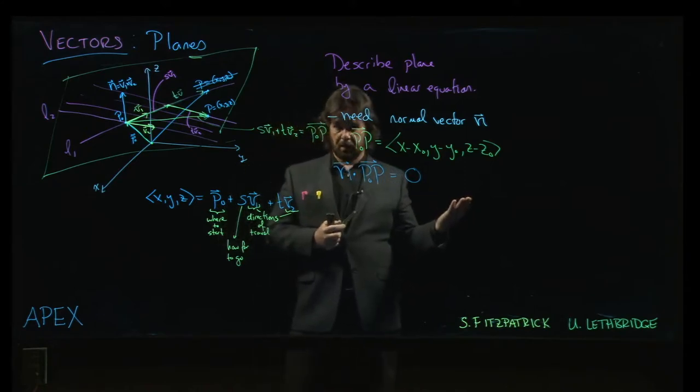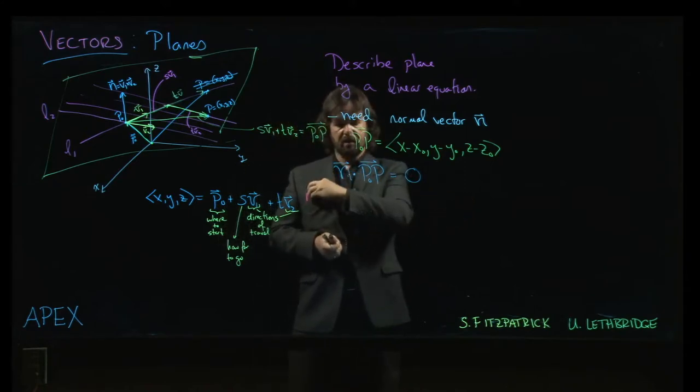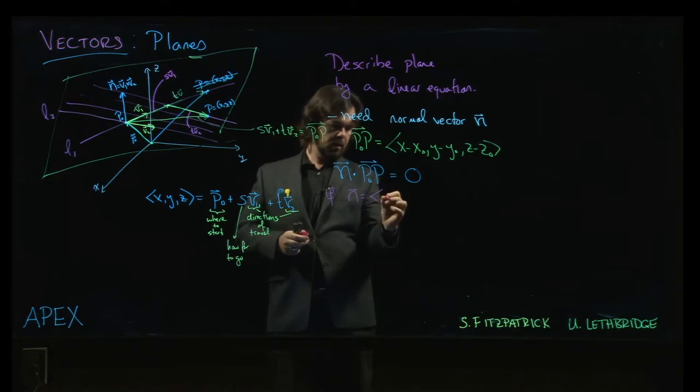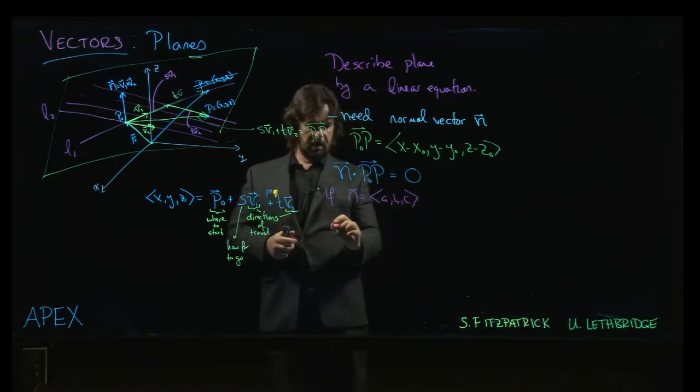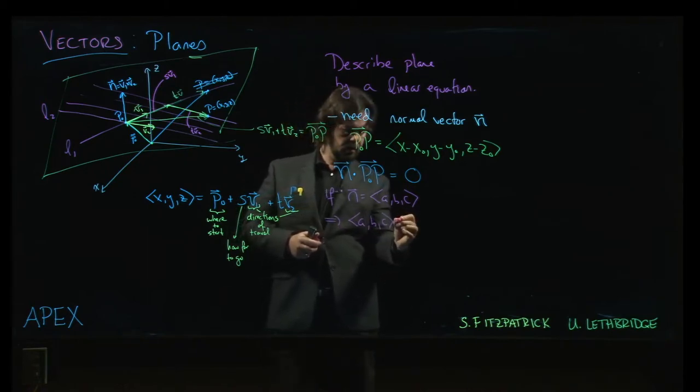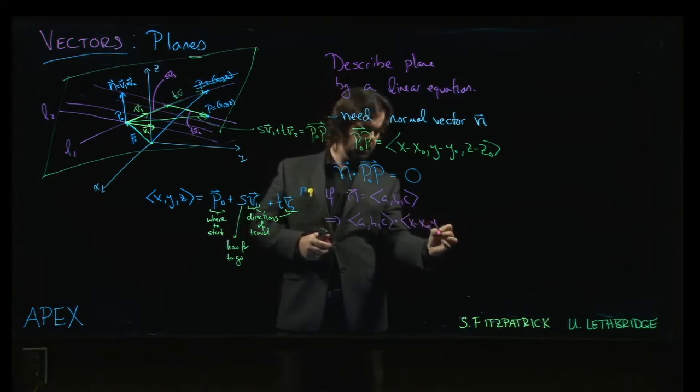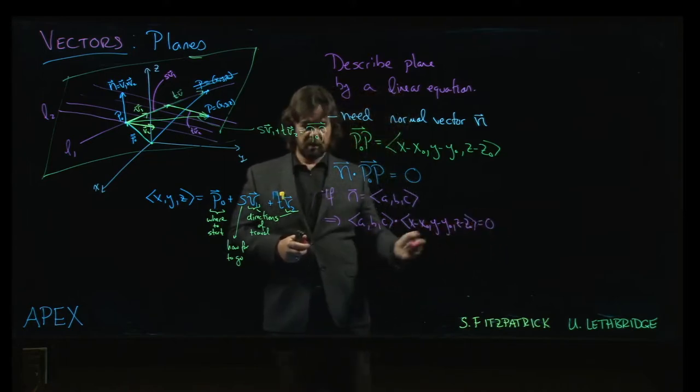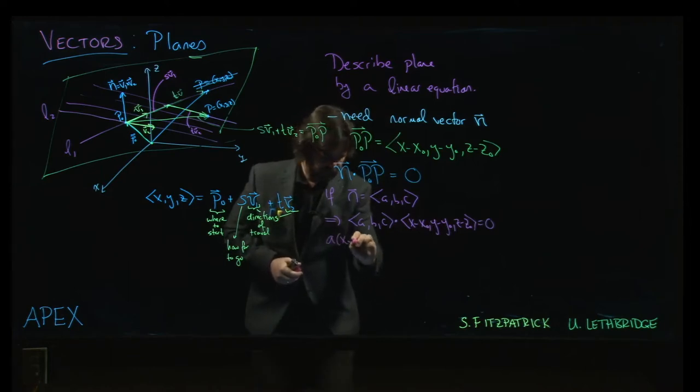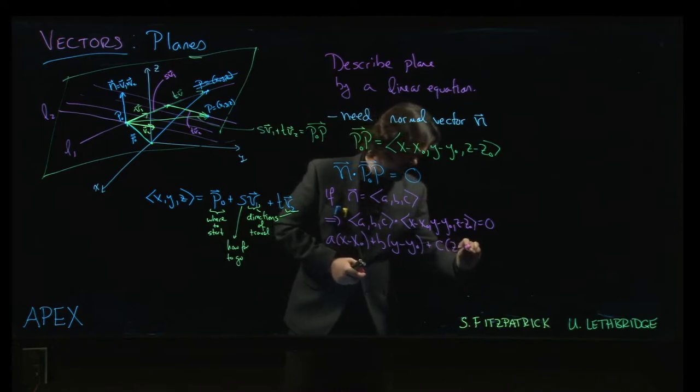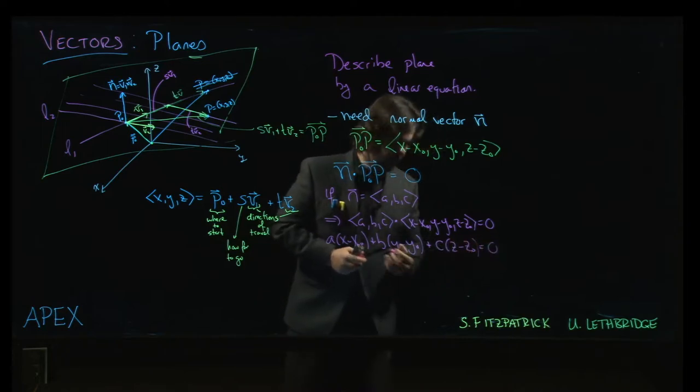And, we can forget all about the fact that that vector came from this linear combination of these two direction vectors. And, we can just write that down. And, so, we forget about the lines. We forget about the v1. We forget about the v2. All we kind of keep in mind is the normal vector and some point on the plane. We have some specified point on the plane, this p0.